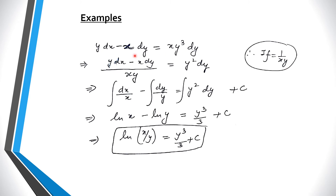We multiply the whole equation by 1 over xy. Here xy cancels out and we are left with y squared dy on the right side. Now we integrate both sides. The left side is the complete differential of log(x/y), and its integral gives log(x/y). The right side integrates to y cubed over 3 plus c. So this is the solution of this differential equation using the differential formula.